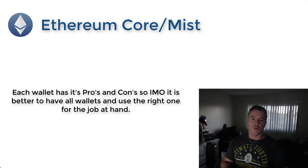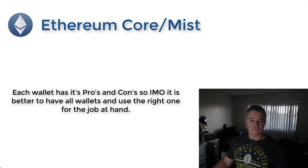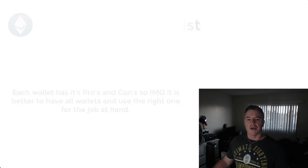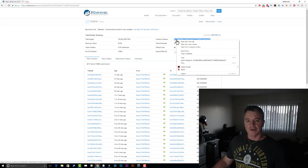I think if you can have the Ethereum Core Wallet with Mist, plus MyEtherWallet, Parity, and MetaMask, and use them for different things depending on what you need, you have a really good advantage. Now let's grab the contract address again.